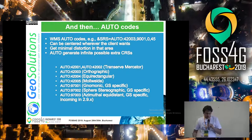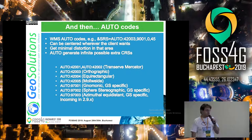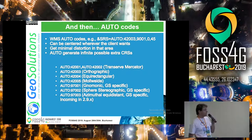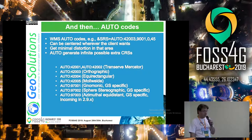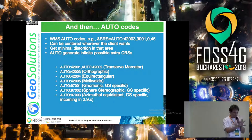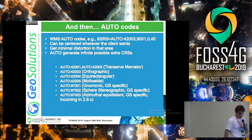And then there are also autocodes in WMS. Autocodes are a way to specify a generic CRS, like auto-Mercator, and provide the central axis on the fly. We have a number of customers doing that because they want to center the projection on the viewing area continuously to get the minimum distortion possible.